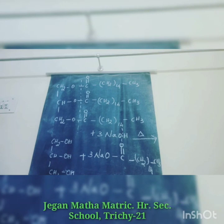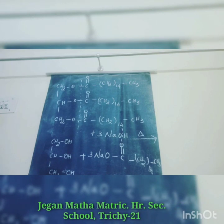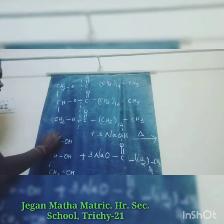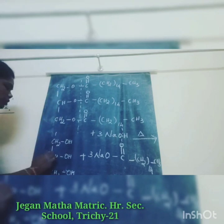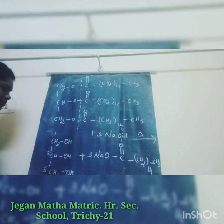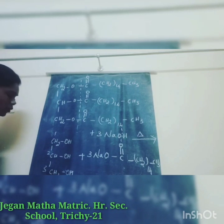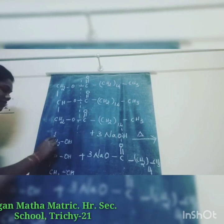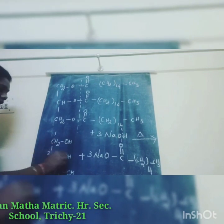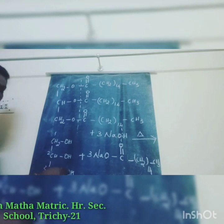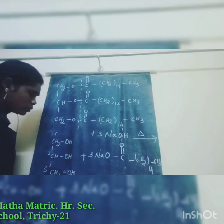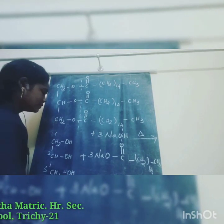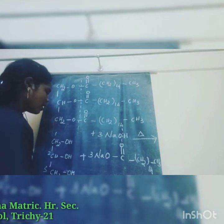Glycerol IUPAC name: 3 carbons are present so root is propane. OH groups are present on C1, C2, and C3. So 1,2,3 — three OH groups means triol. IUPAC name is propane-1,2,3-triol.